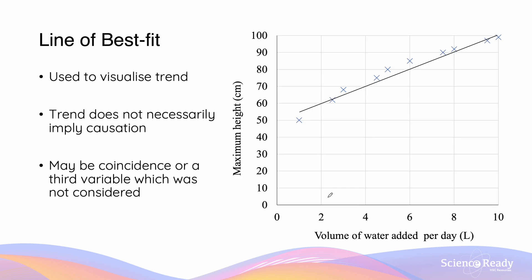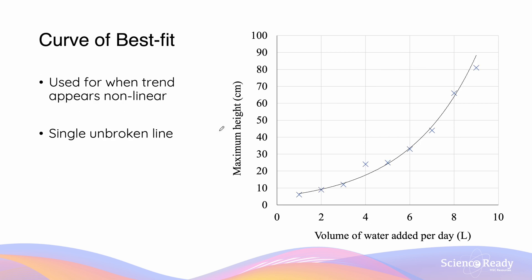Usually when we are displaying data using a scatter plot, a line of best fit is included to help better visualize our trend. However, the trend does not necessarily imply causation, and may be a result of coincidence or a third variable that was not considered. If the trend of the scatter plot appears to be non-linear, we will use the curve of best fit instead. The curve of best fit should be a single unbroken line, which fits approximately in between the plotted data points.